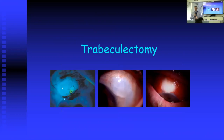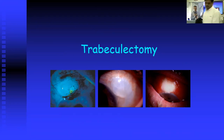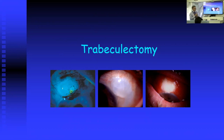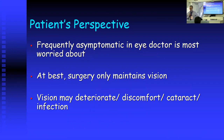There is also a bad reputation for trabeculectomy because there are many complications, as illustrated here. I'm going to try and explain how we're trying to avoid many of these complications. You can see we have a bleb leak, blebitis, and bleb-related endophthalmitis.